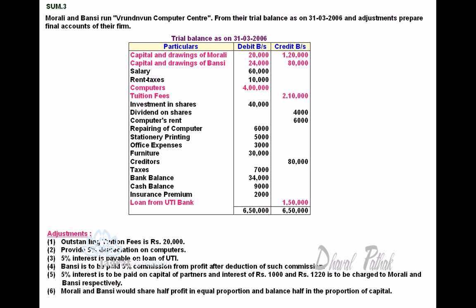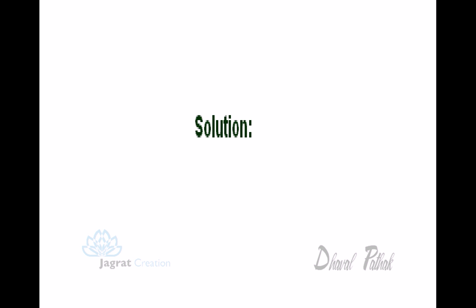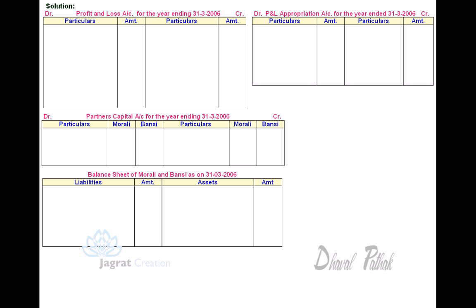This is a computer centre which renders services, so a trading account is not required to be prepared. Now let us start preparation of Final Accounts. We prepare here Profit and Loss Account for the year ended 31st March 2006, Profit and Loss Appropriation Account, Capital Accounts, and the Balance Sheet as on 31st March 2006.